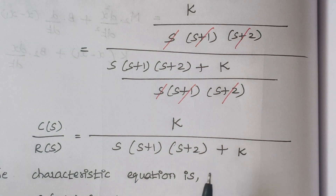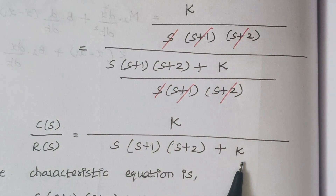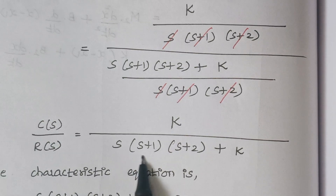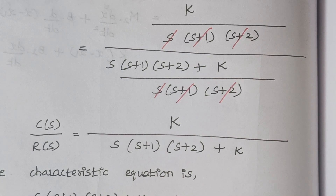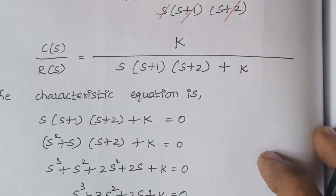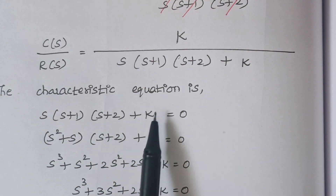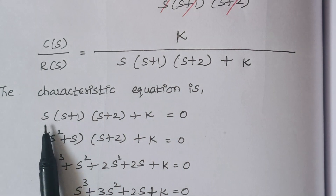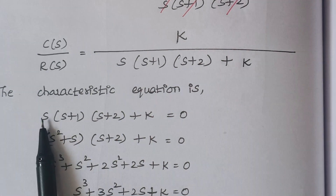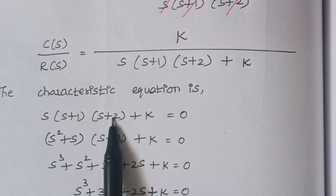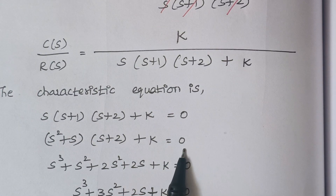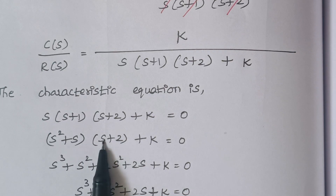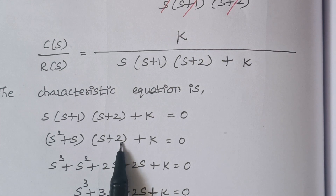The denominator term of the closed loop transfer function is known as the characteristic equation. So our characteristic equation is s(s+1)(s+2) + K = 0. We simplify by multiplying: s·(s+1) gives s² + s, and then we multiply by (s+2).